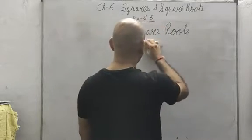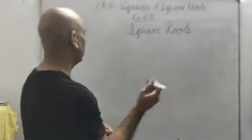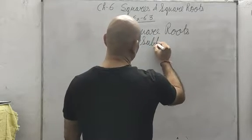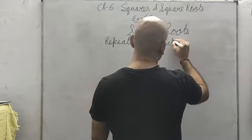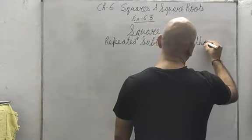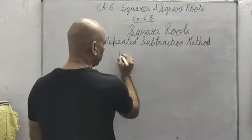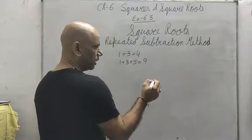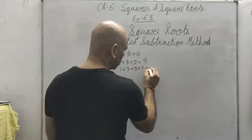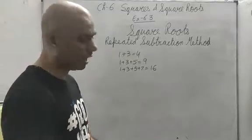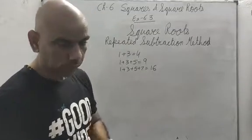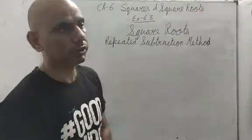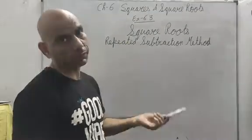The first method is known as the repeated subtraction method. In the first exercise, we studied that by adding the odd numbers we will get perfect squares. So the same thing we are going to apply here — start subtracting successive consecutive odd numbers from the given square number.